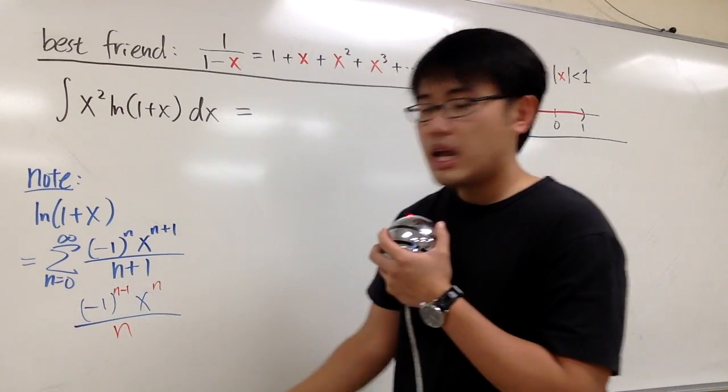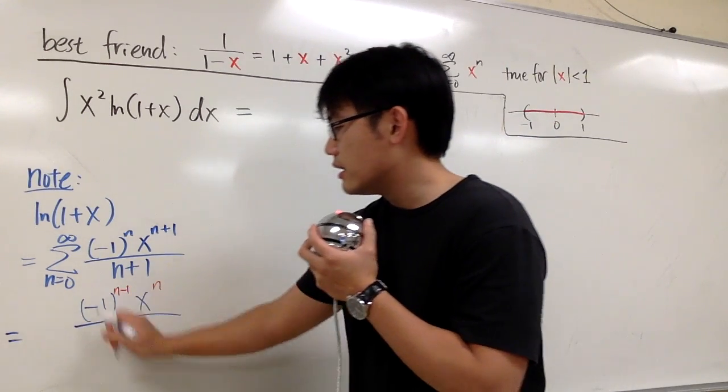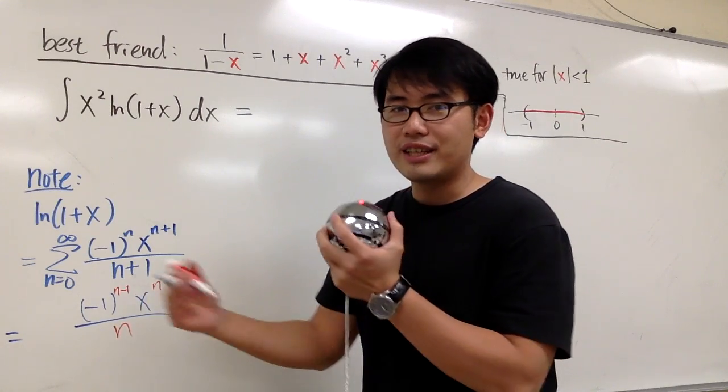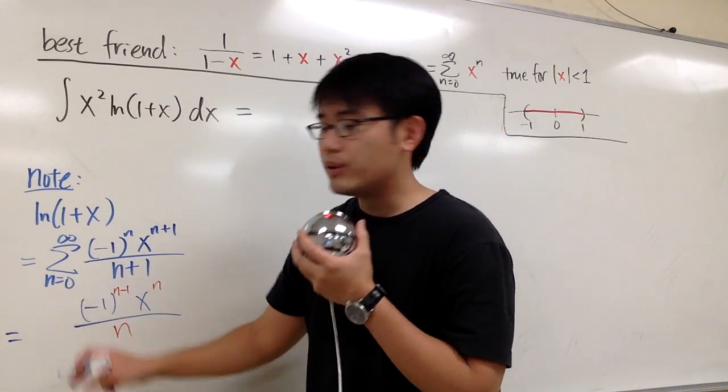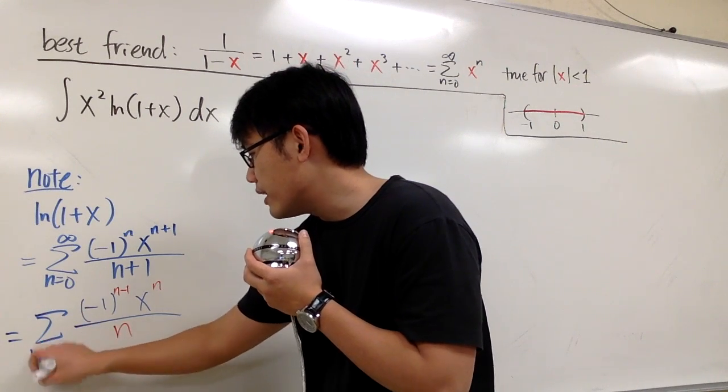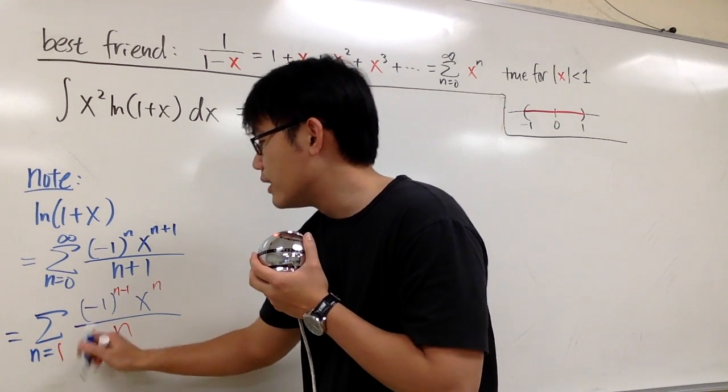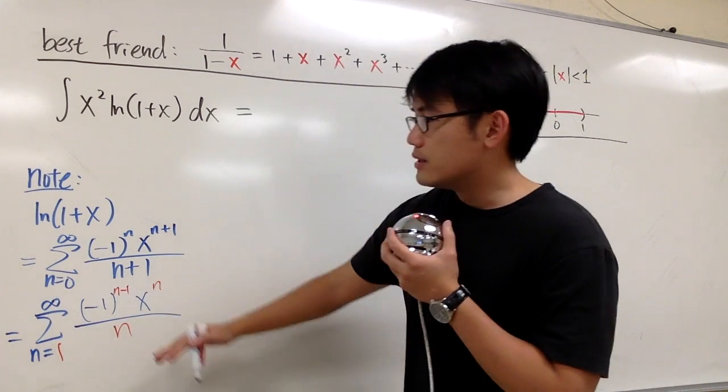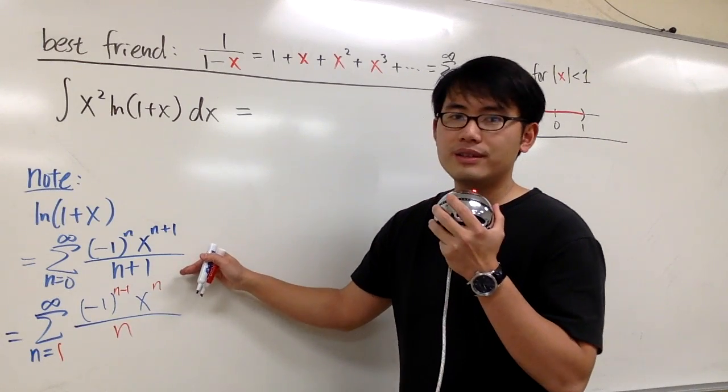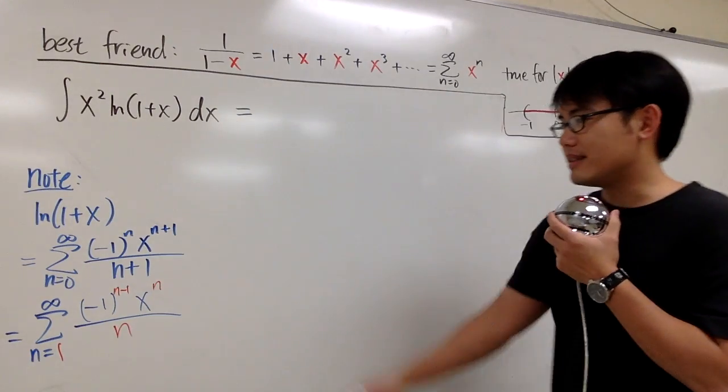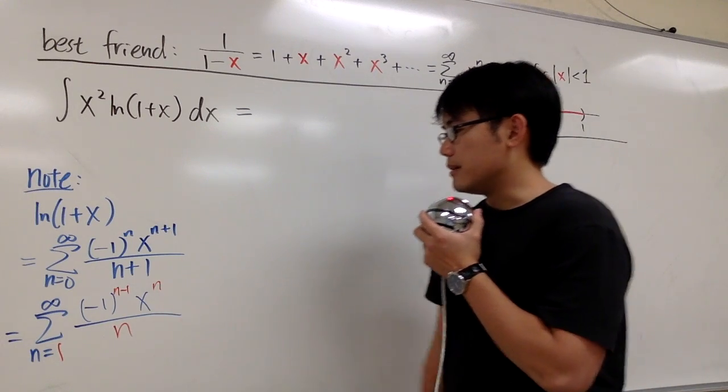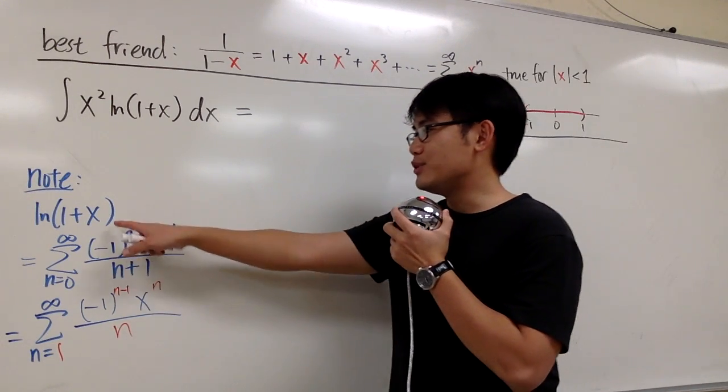And then to compromise the change in our formula, we will add 1 to our starting n value. So we have sigma when n goes from 1 to infinity. So this and that are equivalent, which is the same as ln of 1 plus x. That's the series expansion for that.